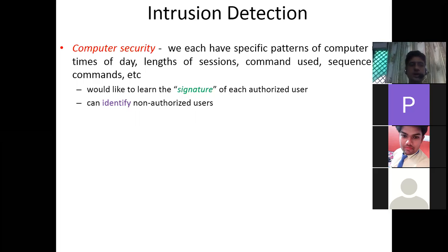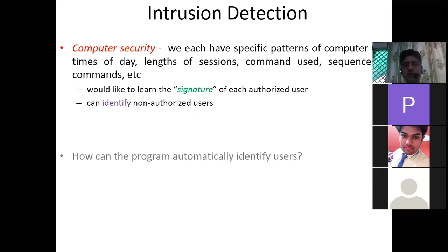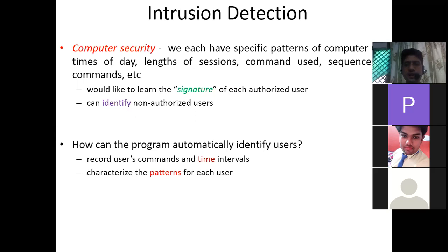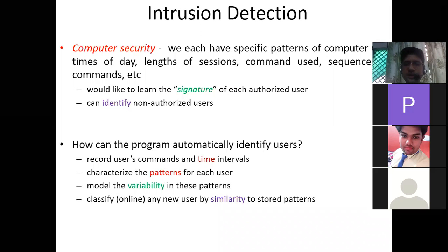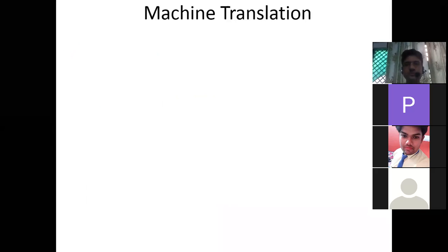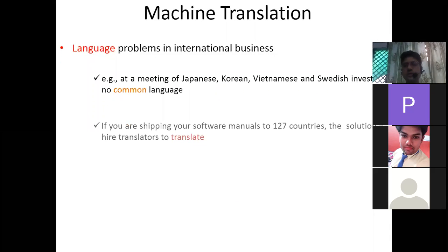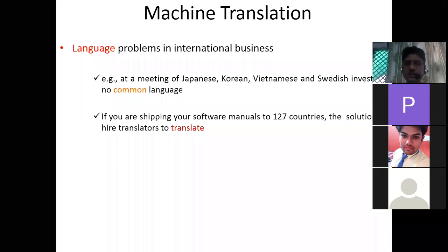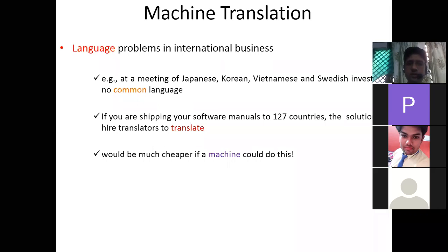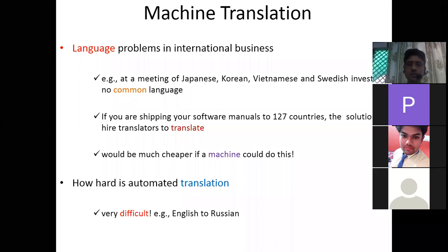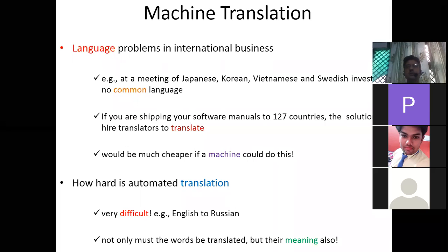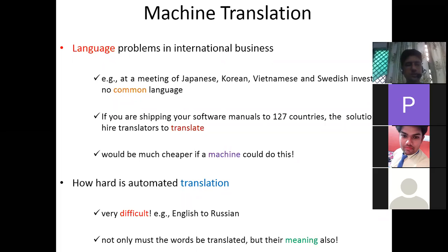In intrusion detection and computer security, each authorized user has a unique signature. The system records commands and time intervals, characterizes patterns for each user, models variability, and classifies new users by similarity to stored patterns. In machine translation, translating from one language to many is costly with human translators, so we need machines — though it is very hard to translate, for example, English to Russian or Sanskrit, with intact meaning. These are some key applications of AI.